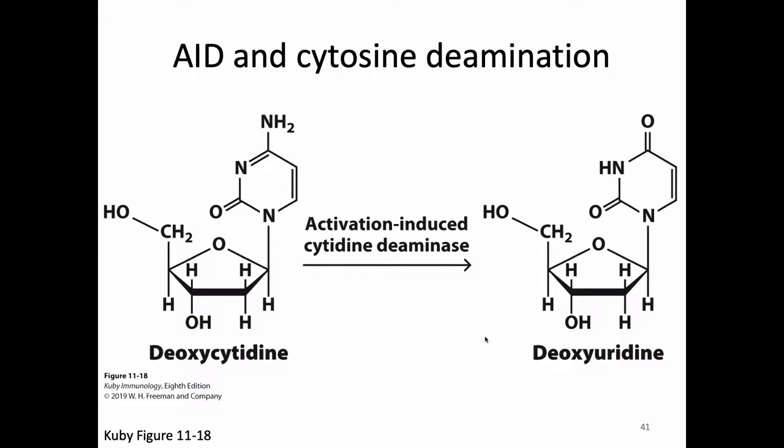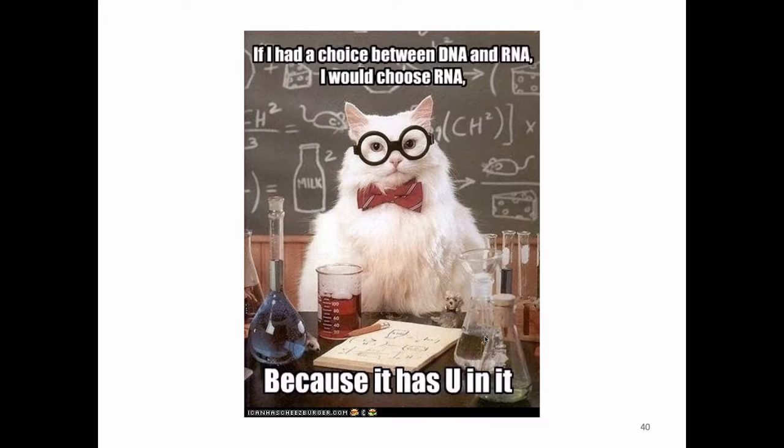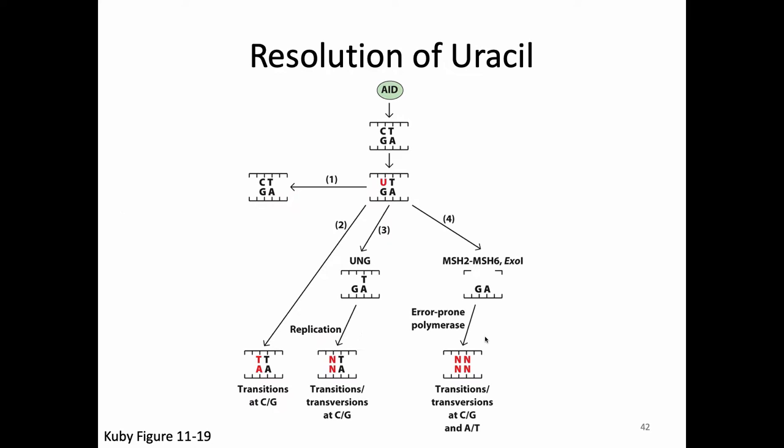As we recall, DNA is not supposed to have uracil in it. So what we have done is added uracils into DNA where there aren't supposed to be any. This now looks like a mutation and is a problem for that DNA — the uracil needs to be taken care of. AID will act on a piece of double-stranded DNA, deaminate a cytosine and turn it into a uracil. Now we have problems: uracil is not supposed to be in DNA, and this uracil is paired with a G, which doesn't work.